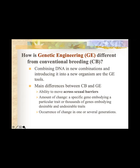The main differences between conventional breeding and genetic engineering are: the ability to move across sexual barriers — for example, a bacterial gene can be transferred to a plant with no sexual relationship; the amount of change — a specific gene embodying a particular trait versus thousands of genes including undesirable ones; and the occurrence of change — genetic engineering is faster. In conventional breeding you have no control over which gene will be transferred, and it takes more generations.